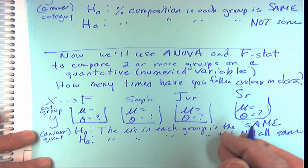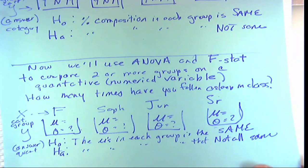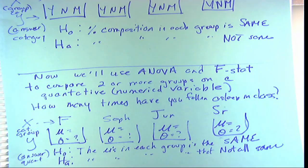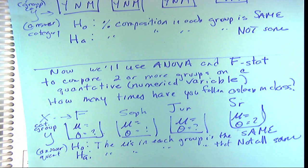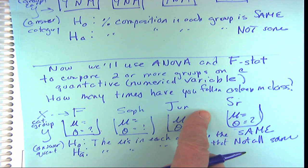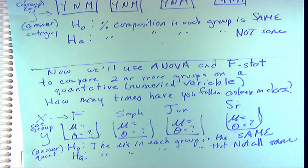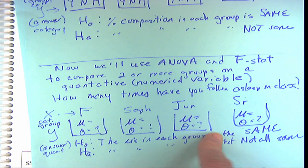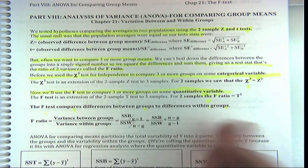This is the big picture: we have a categorical X predicting a quantitative Y. If I told you what year a student is in, does that tell us anything about the means? It's like stereotyping — if I know what group you're in, can I make some meaningful prediction about a quantitative variable? That's what ANOVA is doing.